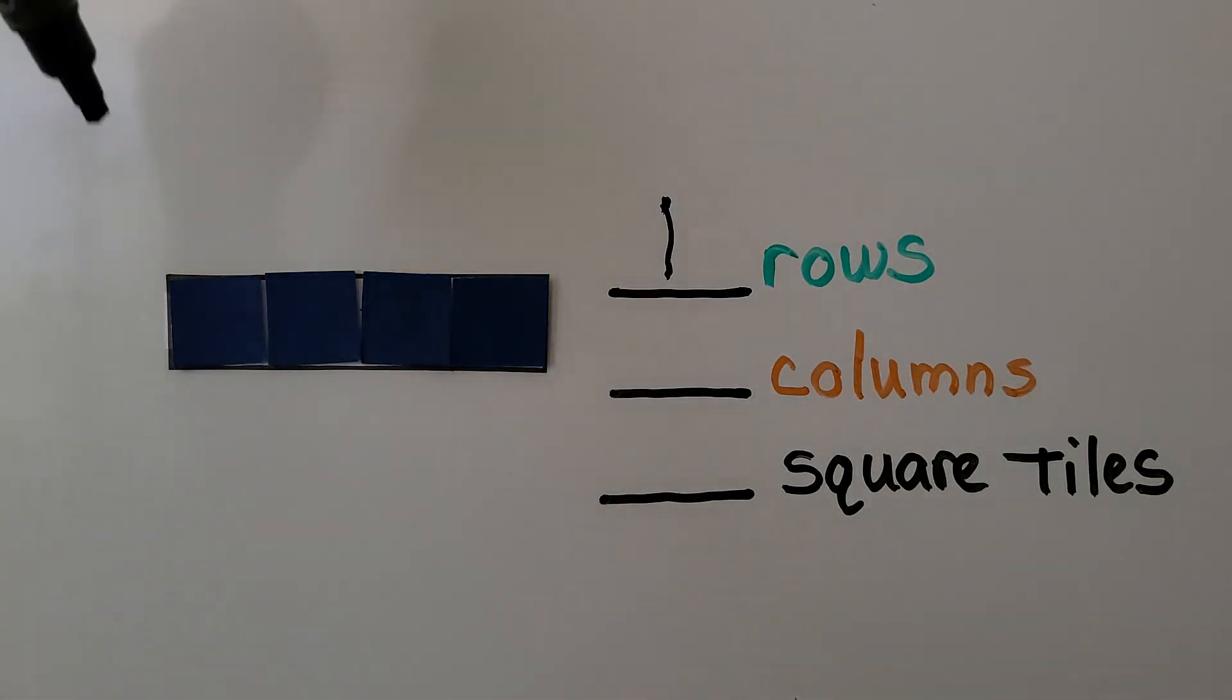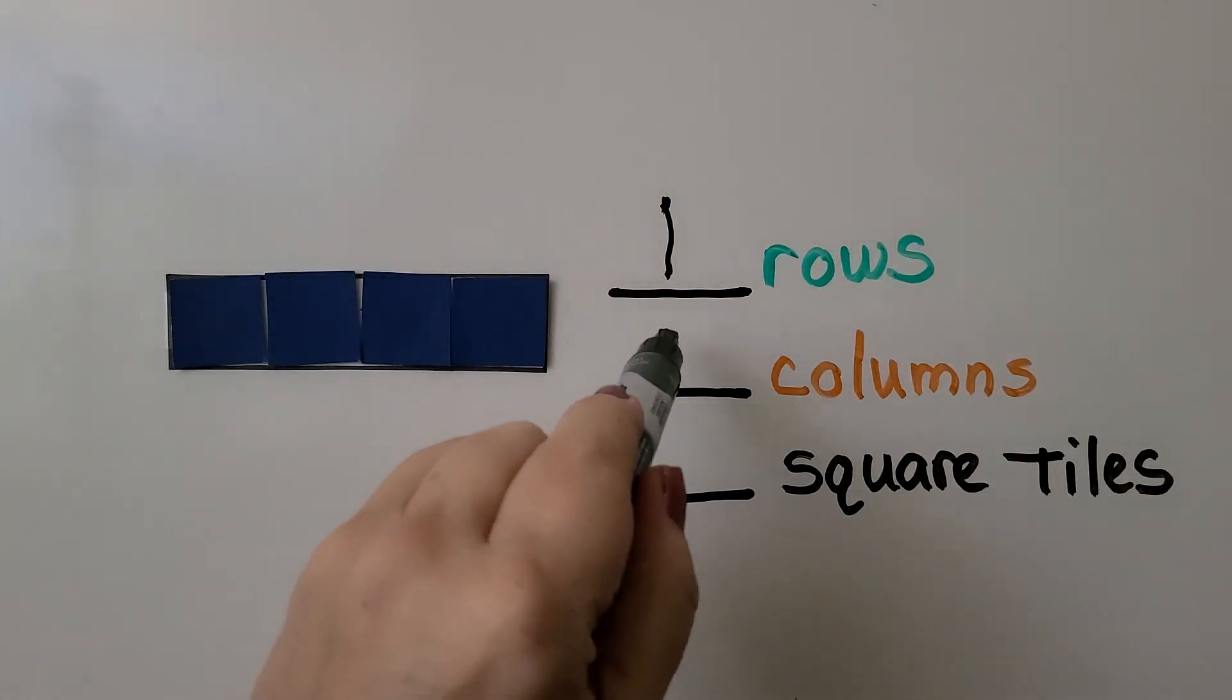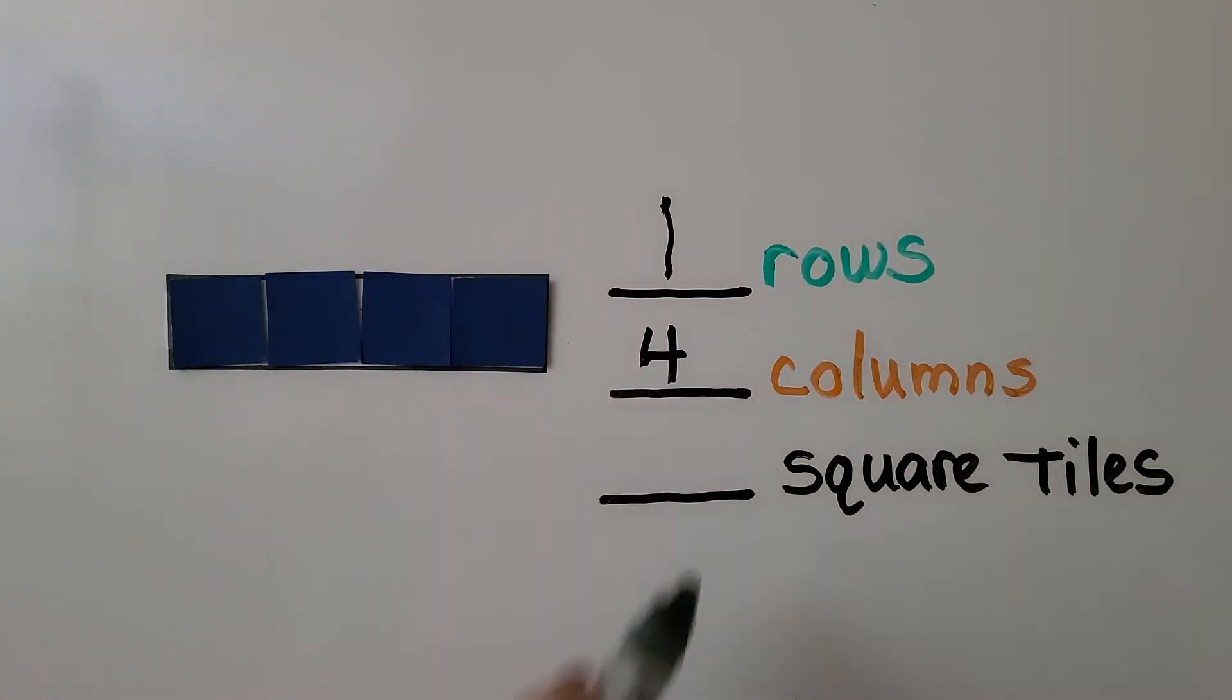That's 4. But we have 1, 2, 3, 4 columns. We have 4 square tiles.